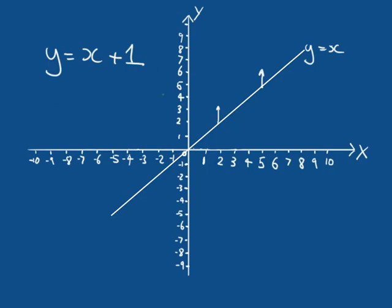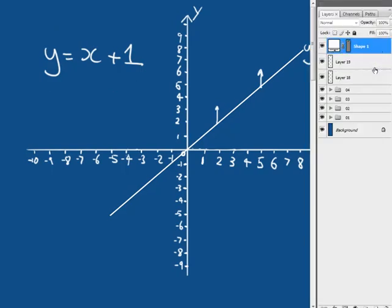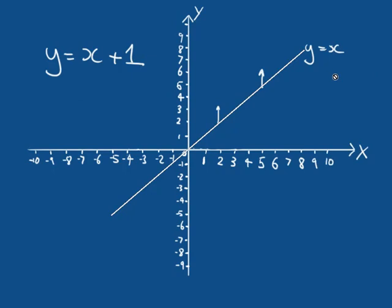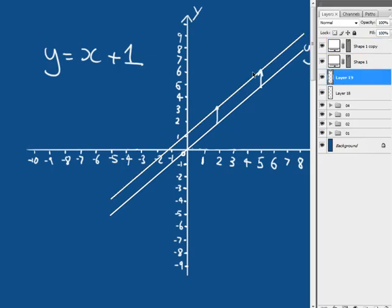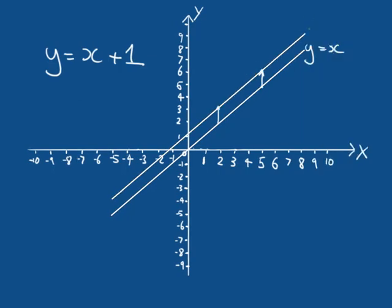If we were to draw this line, we'd see Y equals X plus one — it is exactly the same angle, the same gradient on both lines. They are parallel to each other, but we have translated the line by adding something to that X value. We can translate further than one by adding more — for example, Y equals X plus three translates up by three units.